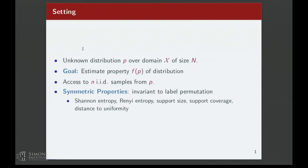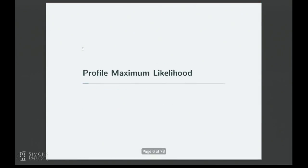For example, if it was an urn of colored balls and I care about some property that depends on the distribution but not on how many red balls versus blue balls there are — if all of the labels were permuted, the value of the property would be the same. For example, entropy is such a property, support size is such a property. So we're interested in properties that just depend on the histogram of the distribution.